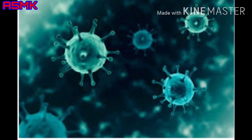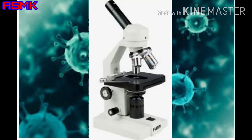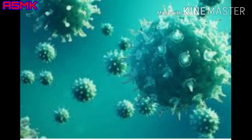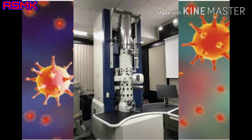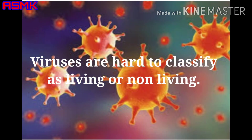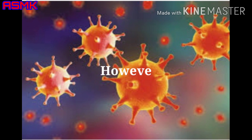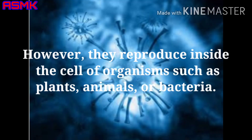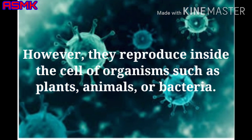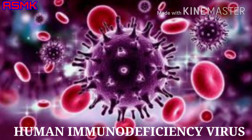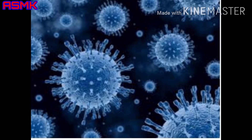Viruses. They are so small that they cannot be seen using ordinary compound microscopes. They are usually studied with the help of powerful microscopes called electron microscopes. Viruses are hard to classify as living or non-living things. However, they reproduce inside the cells of organisms such as plants, animals, or bacteria. Tobacco mosaic virus and human immunodeficiency virus are examples of viruses.